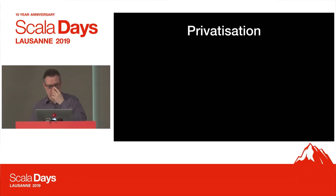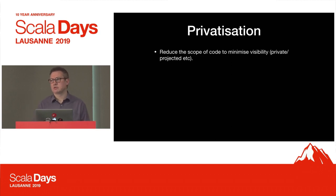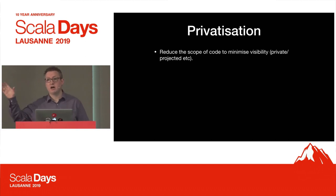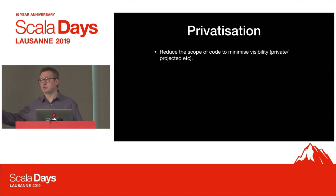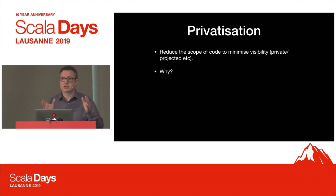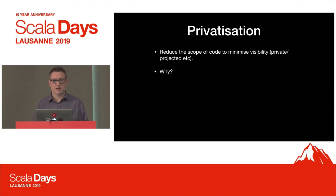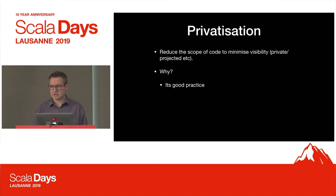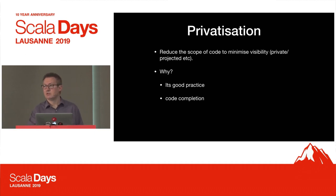So, privatization. This is the second use case I've been playing with, and the idea is simple: reduce the scope of everything to the minimum it's allowed to be to make your program still function. If I run this rule, I expect your program to compile and run beforehand, and I expect it to compile and run afterwards with no visible differences. Why would you do this? It's good practice. Minimizing your scope of things is good for your program. It's good for your developers, good for your users if you're a library author. Having everything public is just an anti-pattern. And it actually really helps code completion - this is one of the use cases where I think this is going to be really useful for larger code bases.